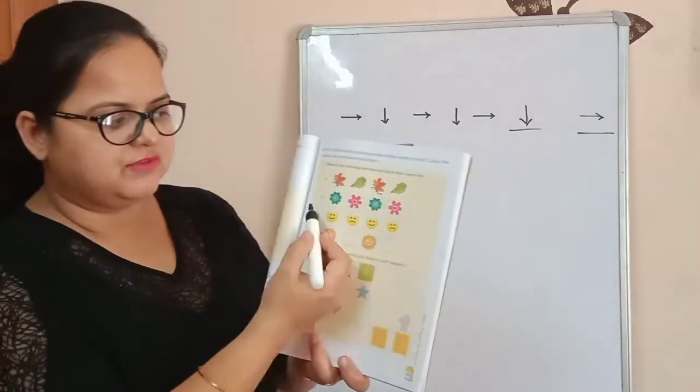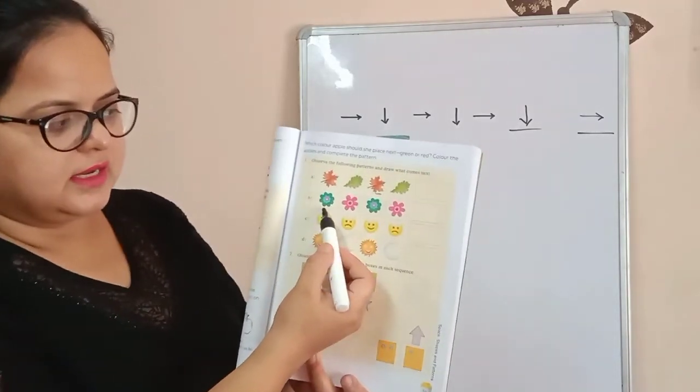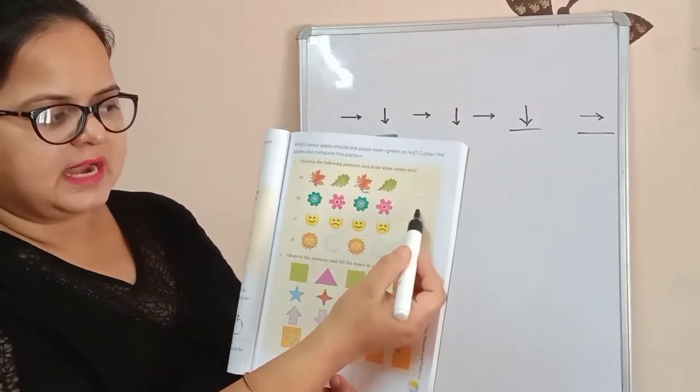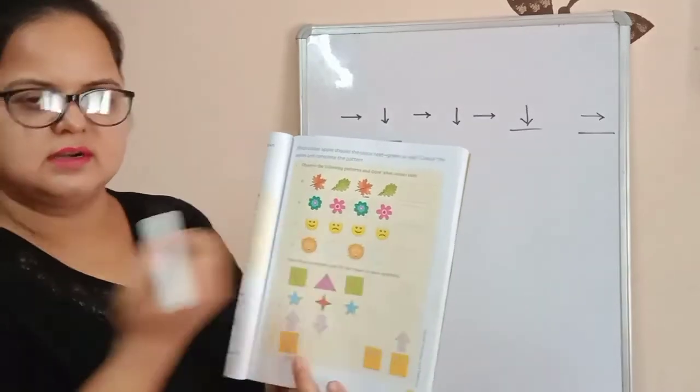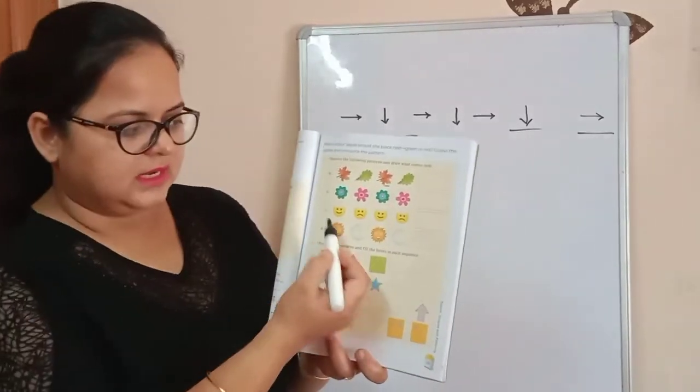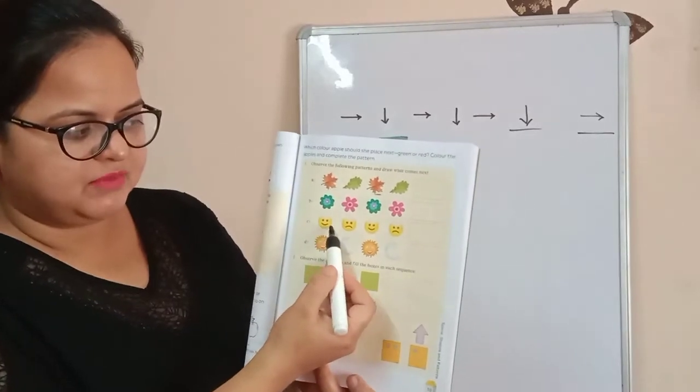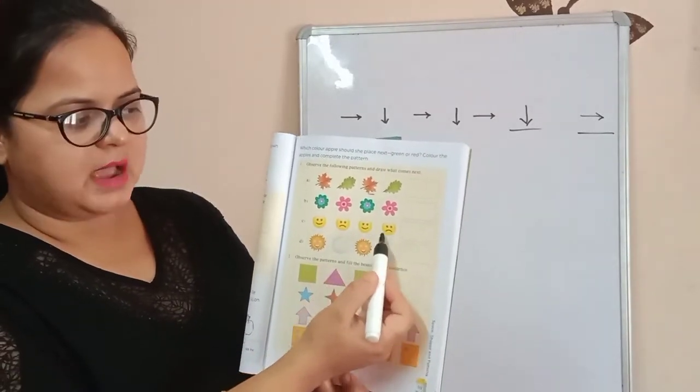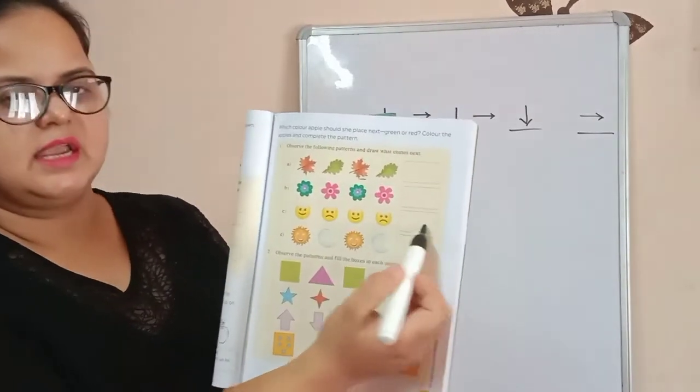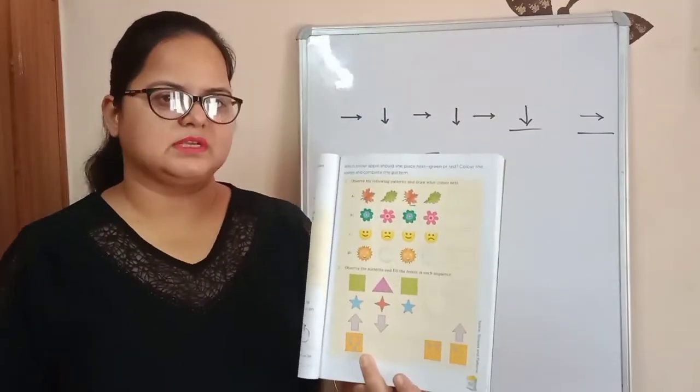The next one is flowers again. Green, pink, green, pink. And here you have to make this green flower. The next one is happy face, sad face, happy face, sad face. Again here you have to make a happy face.